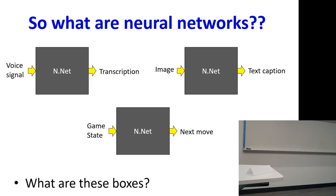Now we begin with the actual material. These are the tasks we just spoke of — neural networks have achieved the state of the art in speech recognition: a voice signal goes in, a transcription comes out; an image goes in, a text caption comes out; a game state goes in, the next move comes out. But what happened between the input and the output was a black box — what exactly is this black box? This is what we're really going to be focusing on.